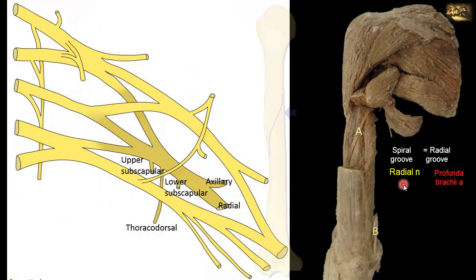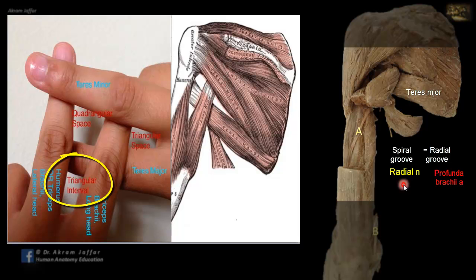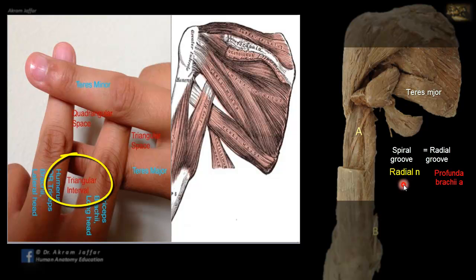The radial nerve originates from the posterior cord of the brachial plexus, which has five branches: two terminal branches — the radial and axillary nerves — and three others: the upper and lower subscapular nerves, and the thoracodorsal nerve (nerve to latissimus dorsi) between them. The radial nerve leaves the axilla through the triangular space inferior to teres major to gain access to the posterior compartment of the arm.